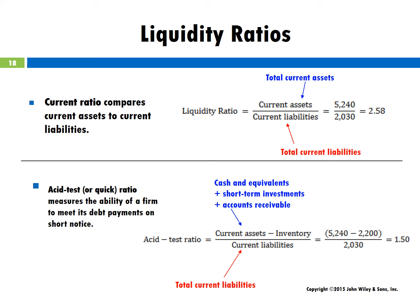Liquidity ratios measure a firm's ability to meet its short-term obligations. As shown on this slide, Diane's Java has $2.58 of current assets for every $1 of current liabilities. A current ratio of 2.2 to 1 is generally considered adequate. Diane's acid-test ratio is 1.5 to 1, so Diane's Java appears to have a strong level of liquidity. Ratios should be compared across periods and within firms within the industry. The ability for a company to convert short-term assets into cash to cover current debts is of critical importance when lenders are seeking repayment.